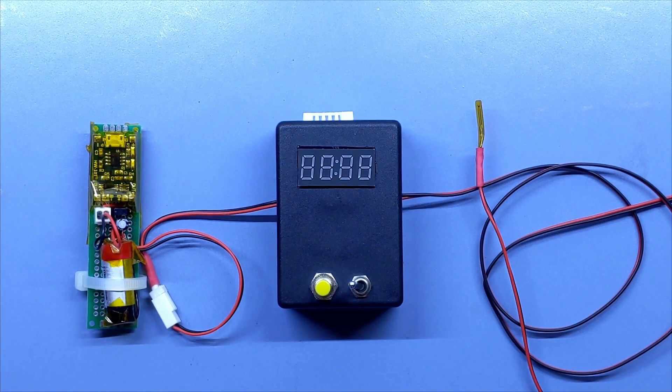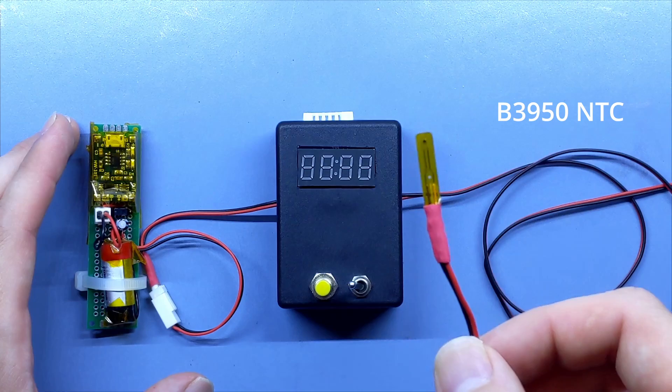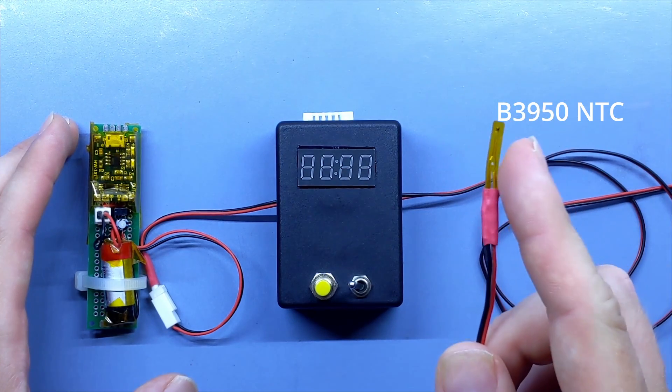This is what I came up with. The logger has dual sensors. The first one is a thermistor, a B3950 NTC, which can be securely attached to any surface.